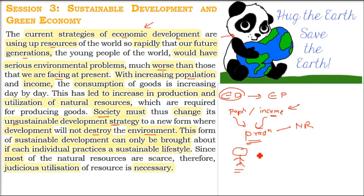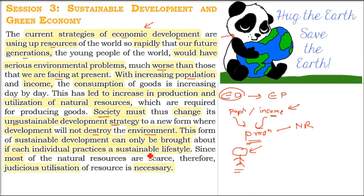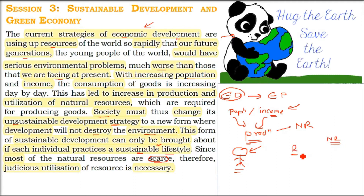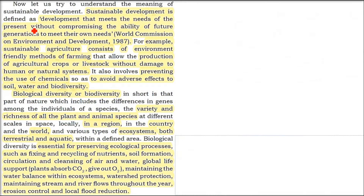We cannot just leave everything to the government. For example, don't litter. You, by yourself, live a sustainable life. Switch off your fan, switch off your light when it is not required. This is what you can do in order to save energy and to save the world. We have to have judicious utilization of resources, because non-renewable resources are scarce and limited. They will take lakhs of years to form again.